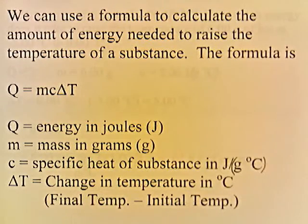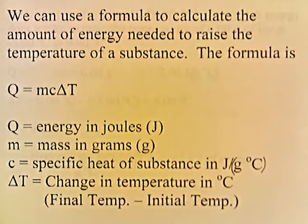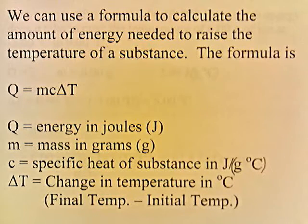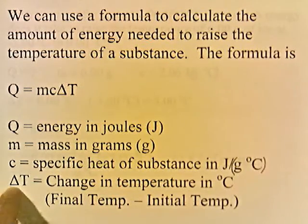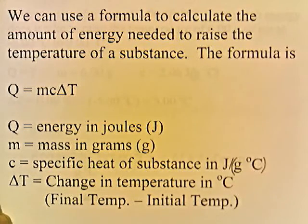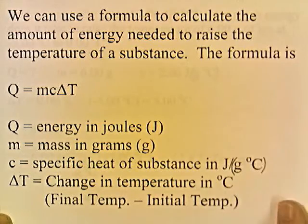We can use a formula to calculate the amount of energy needed to raise the temperature of a substance. The formula is Q equals MC delta T. Q is the energy in joules, M is the mass in grams, C is the specific heat in joules per gram degree Celsius, and delta T is the change in temperature in degrees Celsius — calculated as final temperature minus initial temperature.